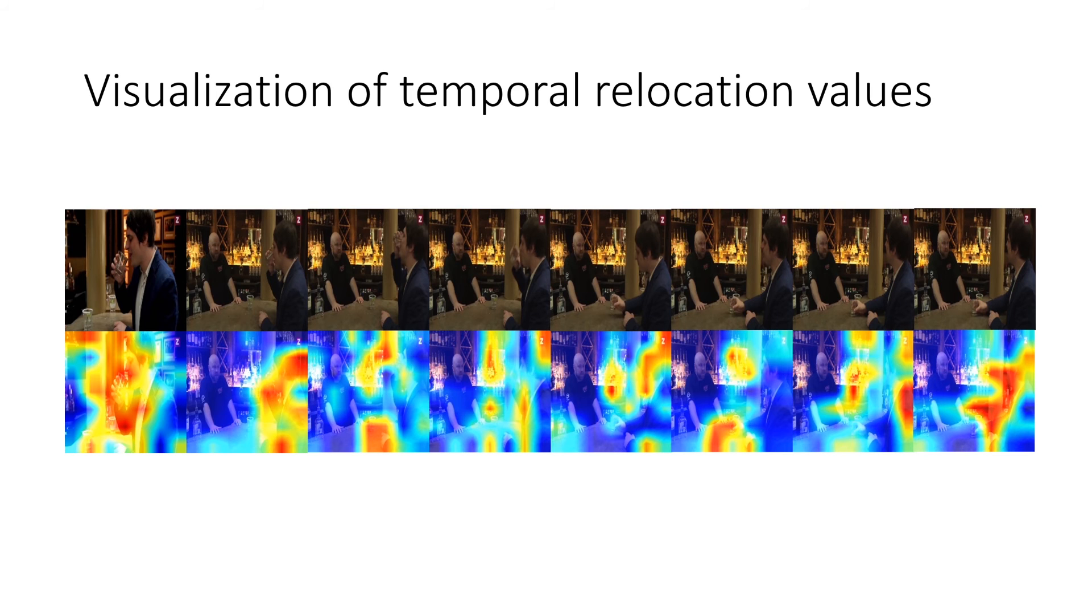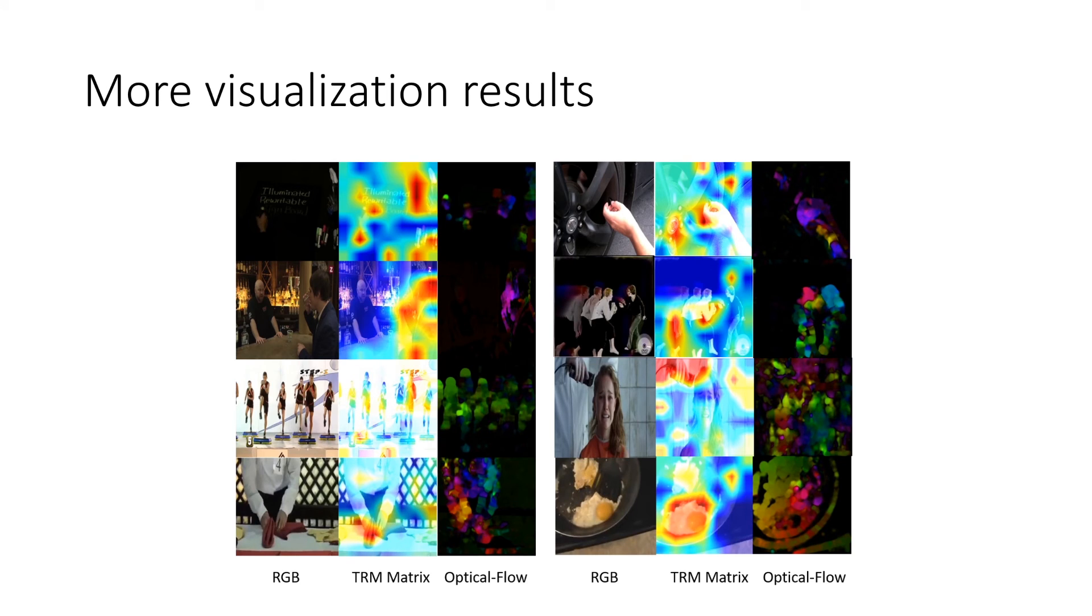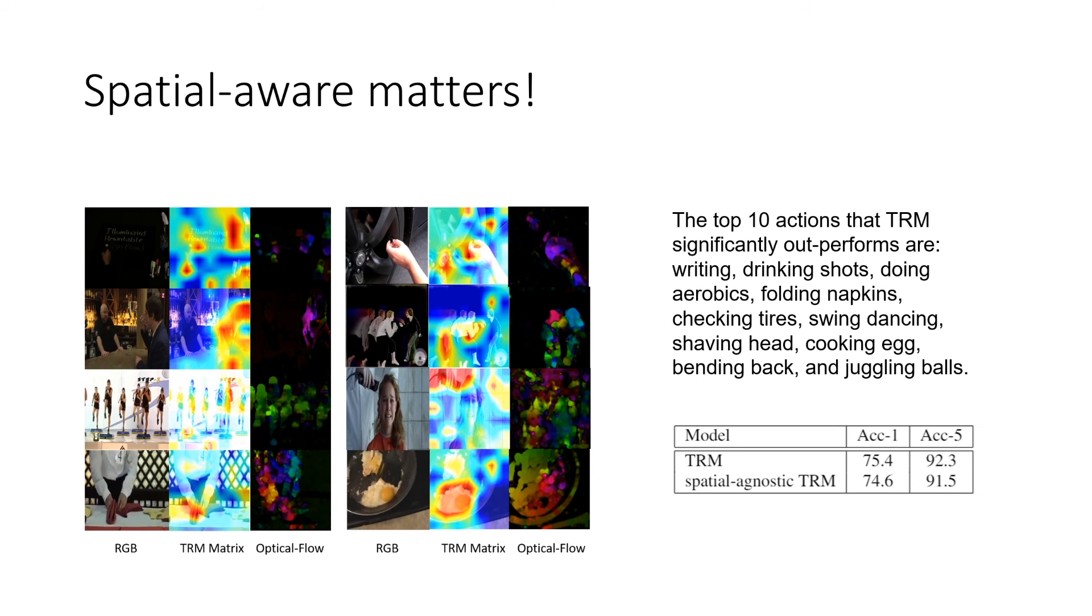Here we can show many more visualization results and we can notice the temporal relocation regions are different from dynamic regions. For example, in the fried egg example, our model assigns a significantly larger temporal receptive field for the egg in the pan. However, if it's just the dynamic regions as shown in the optical flow, both the pan and the egg are dynamic regions. So it shows the priority of the temporal relocation metrics over optical flow.